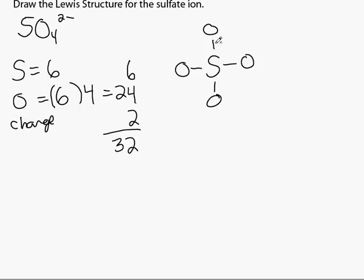Each bond represents 2 electrons: 2, 4, 6, 8. 8 electrons have been used so far. There are now 24 electrons remaining.